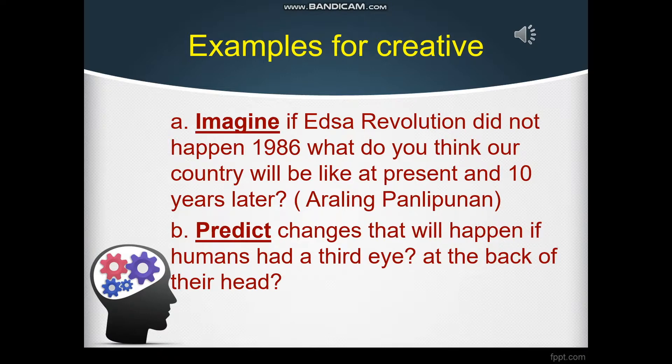Here are some examples for creative thinking: A) Imagine if the EDSA Revolution did not happen during 1986 — what do you think our country would be like at the present and 10 years later? B) Predict changes that will happen if humans had a third eye at the back of their head.